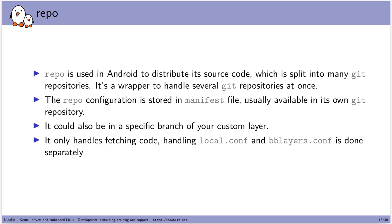The repo configuration is stored in a manifest file, usually in its own git repository — that's what Freescale and Android do. I've also been putting the manifest in a specific branch of my custom layer, which lets me have one fewer git repository to manage. It's not obvious at first, but you can have a git repository where the main branch holds your layer and a separate branch holds the manifest file.